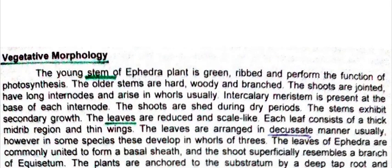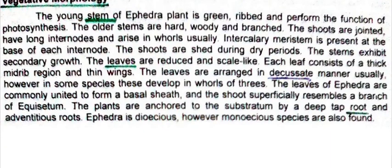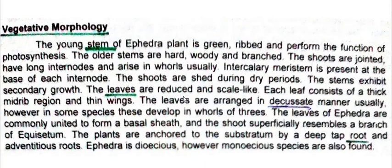Now we will discuss the vegetative morphology of Ephedra. First we will discuss the stem. The young stem of the Ephedra plant is green, ribbed, and performs the function of photosynthesis. Ribbed means the stem has ridges and furrows. Older stems are hard and woody and are branched.